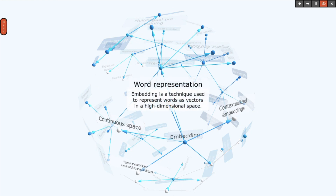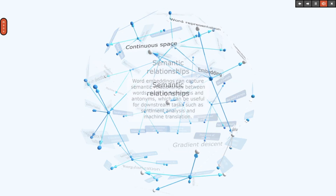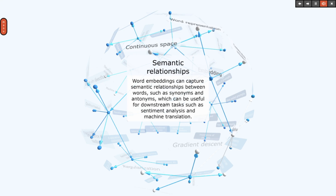Embedding is a technique used to represent words as vectors in a high-dimensional space. Word embeddings are often trained in a continuous space where words that have similar meanings are closer together in the vector space. They can also capture semantic relationships between words, such as synonyms and antonyms, which can be useful for downstream tasks such as sentiment analysis and machine translation.